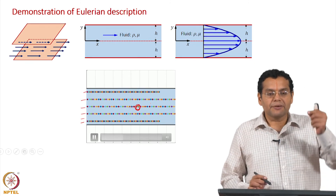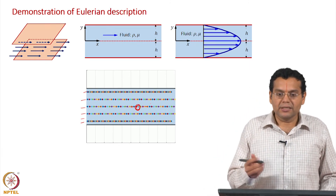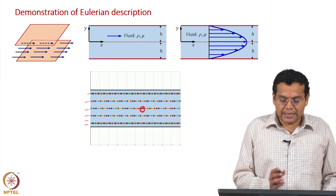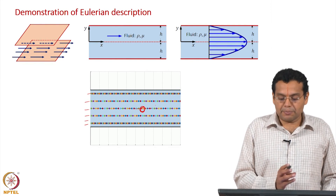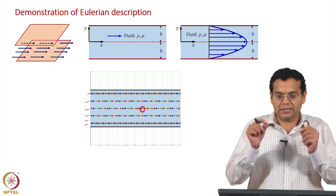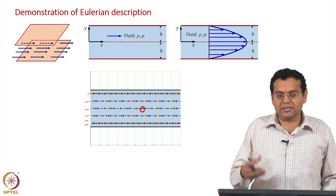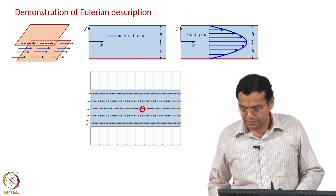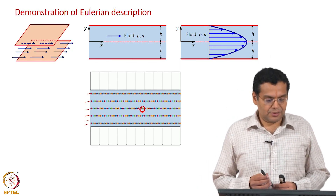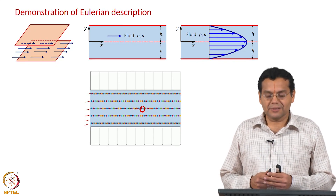In the Lagrangian case, we dye one fluid particle and follow it. In this Eulerian case, different fluid particles pass through the fixed measuring point, where we measure temperature or velocity. Let us stop here and continue in the next lecture.